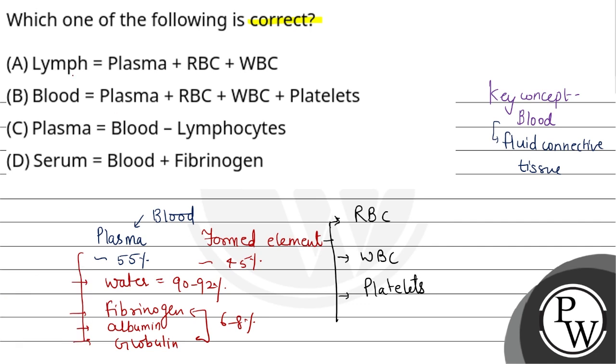Now see the question. They said lymph contains plasma plus RBC and WBC. Lymph has WBC and plasma, but not RBC. That's why lymph is colorless, so this is incorrect. They said blood contains plasma - yes, RBC - yes, WBC also and platelets also, so B is correct here.